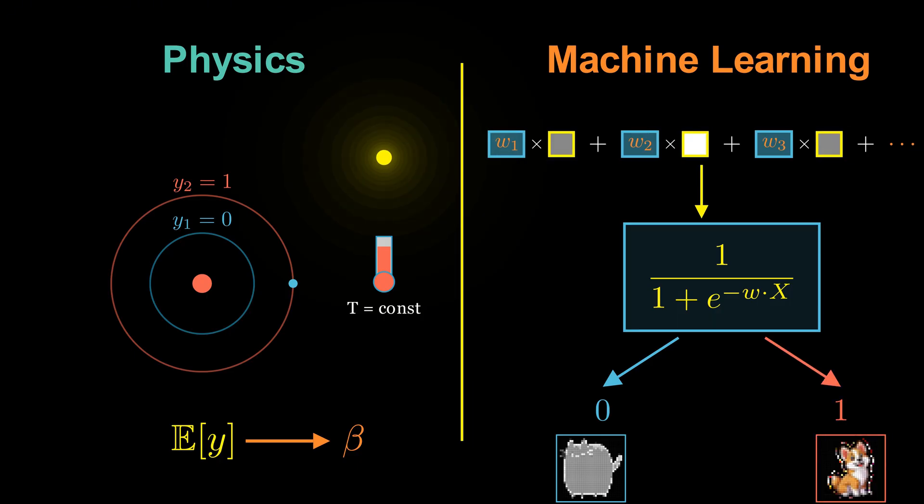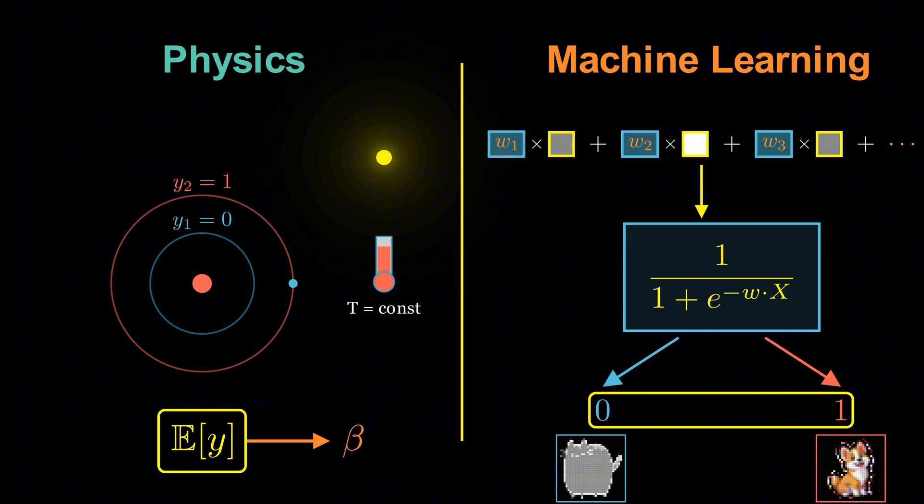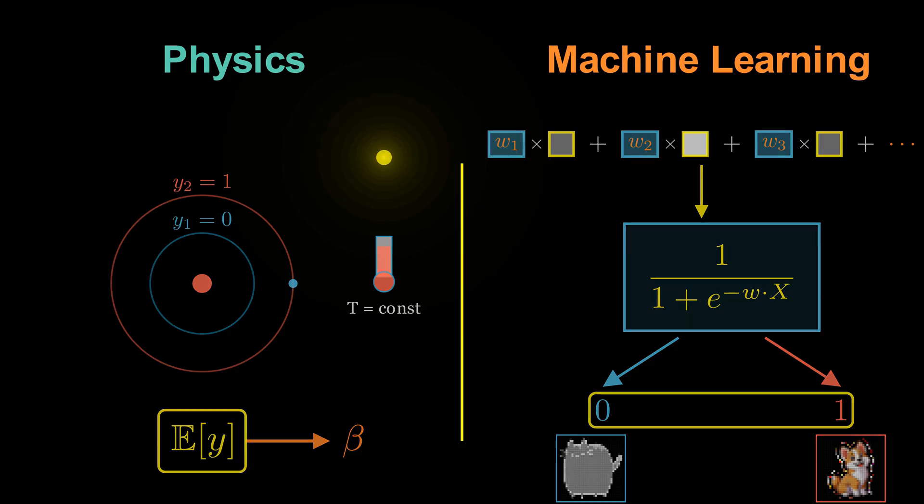In our analogy, the electron's two energy levels correspond to the two possible classes, cat or dog. The inverse temperature beta corresponds to the weighted sum of the pixel values of images, computed as the dot product of W and X. And, the expected energy corresponds to the prediction of the classifier. So, the physics and the machine learning systems are just like two translations of a novel. And here is the dictionary.